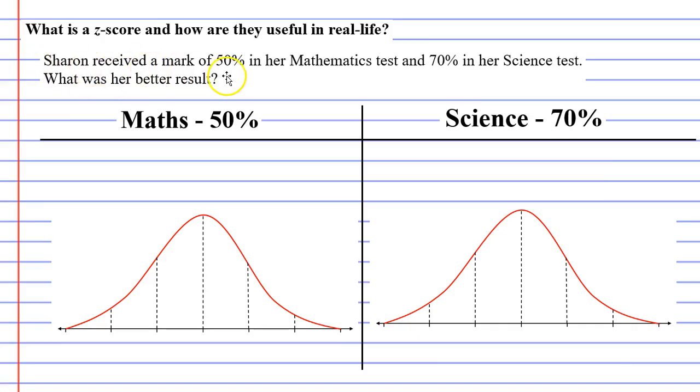So Sharon received a mark of 50% in her mathematics test. That's still the same. But she also received a mark of 70% in her science test. What was her better result? Now, most people,